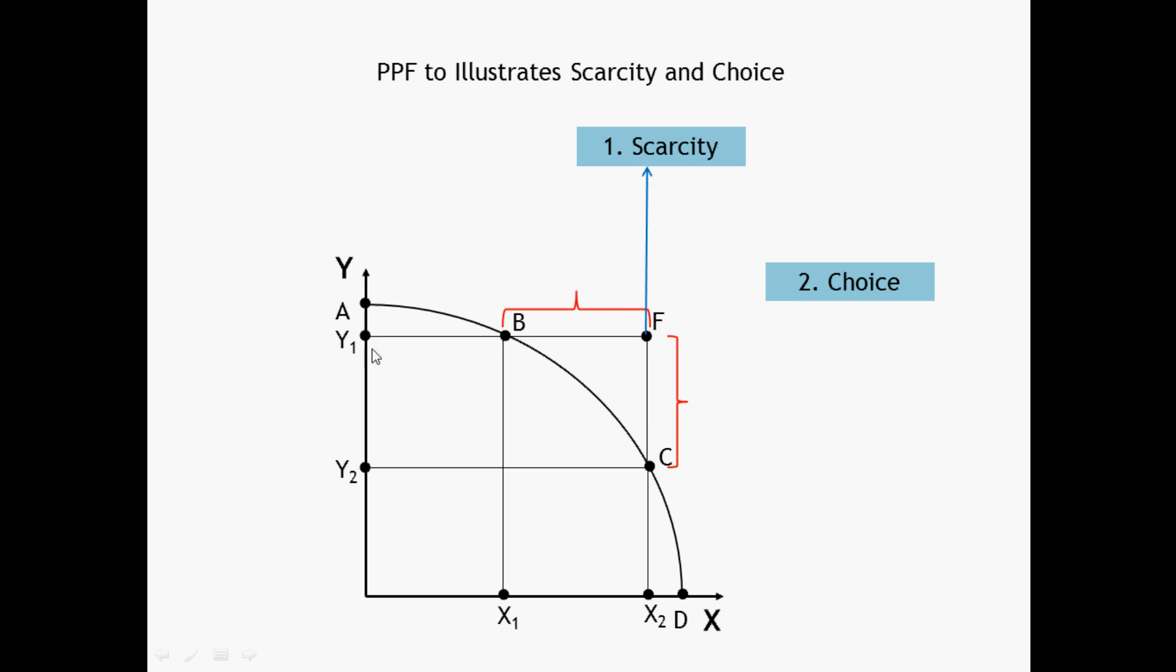If we reduce the production of Y to Y1, we can have X1 amount of X shown by point B. Again, if the production of Y is reduced to Y2, production of X is increased to X2, shown by point C. And at D, all the resources are used to produce X.